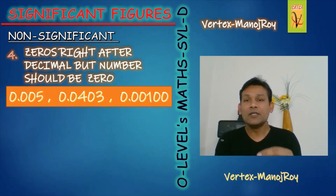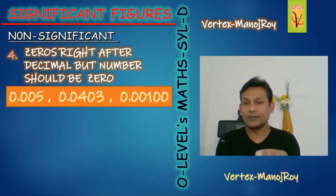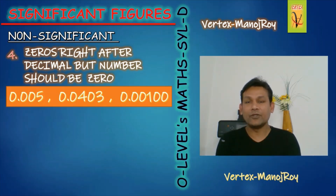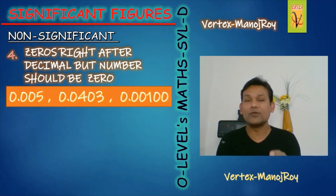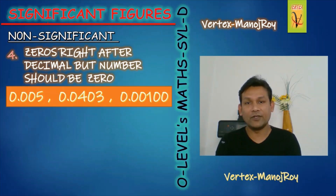Second example: 0.0403. The leading zeros — 0.0 — are not significant, but 4, 0, 3 are. The zero between 4 and 3 is significant because it is between non-zeros. So how many significant figures are there? Three significant figures.